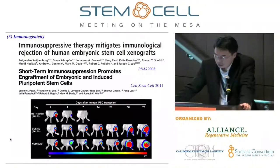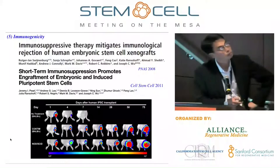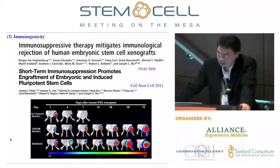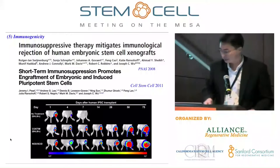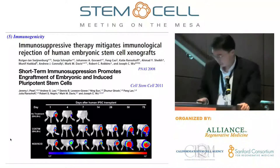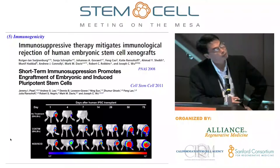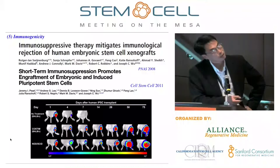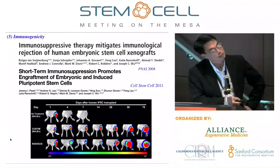Another issue we had to address is immunogenicity. We initially thought traditional immunosuppressive drugs — cyclosporine, mycophenolate, tacrolimus, drugs used for heart transplant — would do the job, but they don't work well in our experience. So from 2008 to 2011 we screened more than 100 compounds and identified a co-stimulation blocker. When allogeneic human iPSCs, undifferentiated, are injected into immunocompetent mice they are rejected as expected; in NOD-SCID mice they form teratomas as expected. However, in immunocompetent animals treated with the co-stimulation blocker, the cells survive quite well. This combination works for ESCs, iPSCs, and their derivatives.